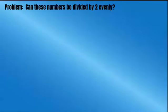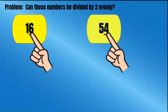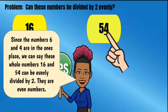Let's solve this problem. Can these numbers be divided by two evenly? We have 16 and 54. Yes. Why do we say yes? Since the numbers 6 and 4 are in the ones place, we can say that these whole numbers 16 and 54 can be evenly divided by two. They are even numbers.